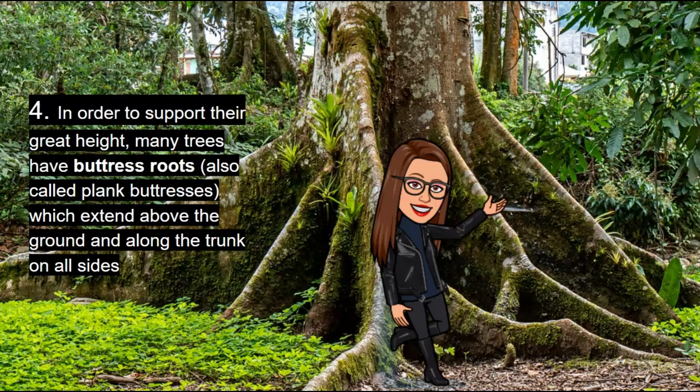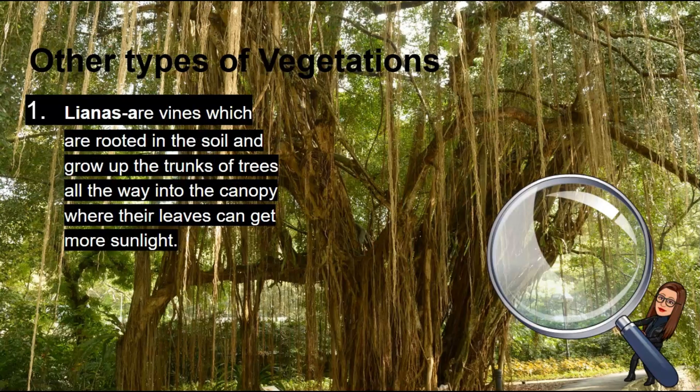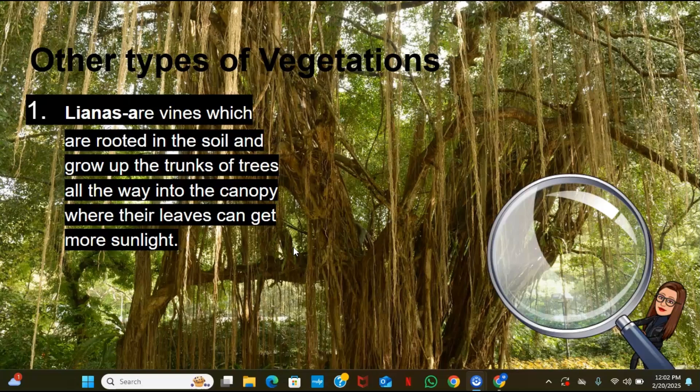In order to support their great height, many trees have buttress roots — also called plank buttresses — which extend above the ground and along the trunk on all sides. The picture in the background is an example of a buttress root. In the rainforest, we also have lianas, which are vines rooted in the soil that grow up the trunk of trees all the way into the canopy where their leaves can get more sunlight. The background picture shows an example of lianas.